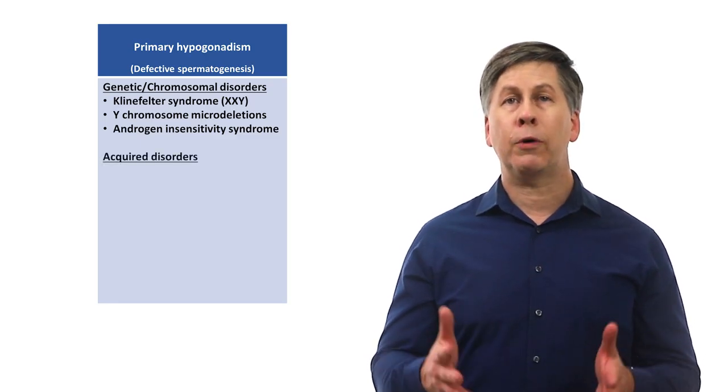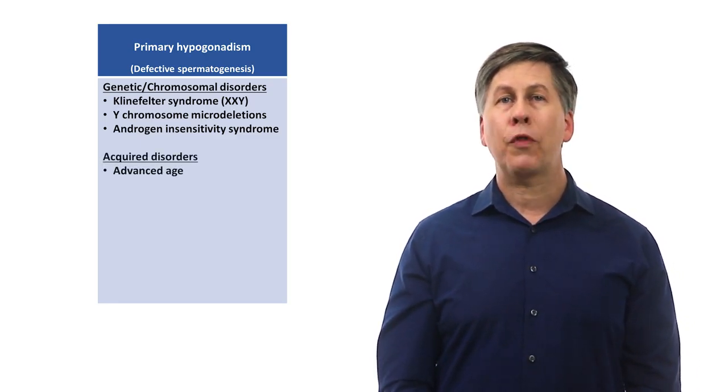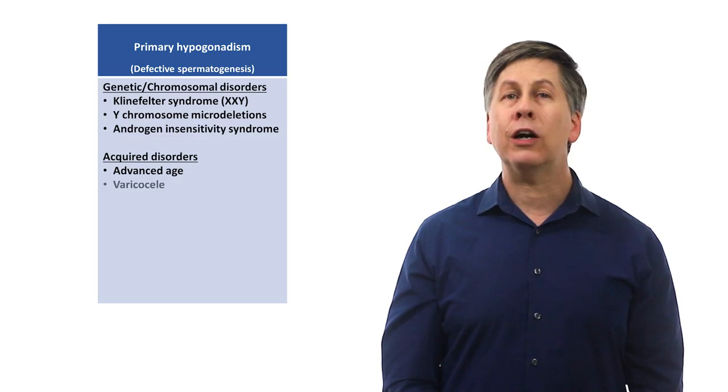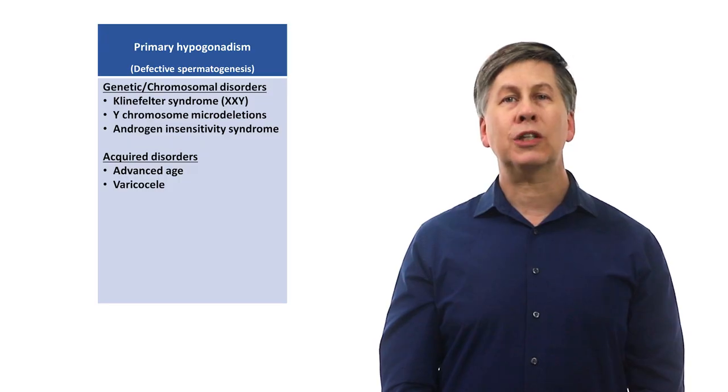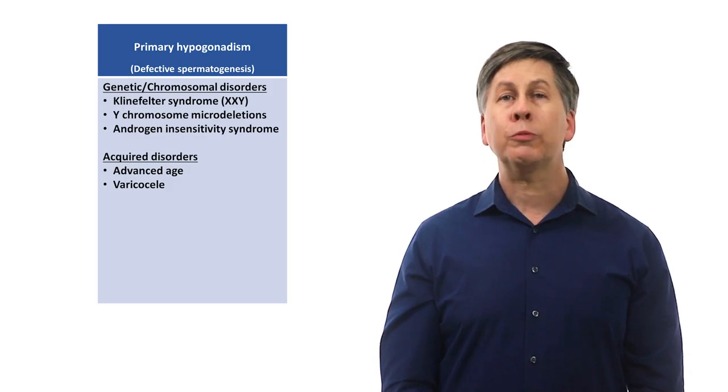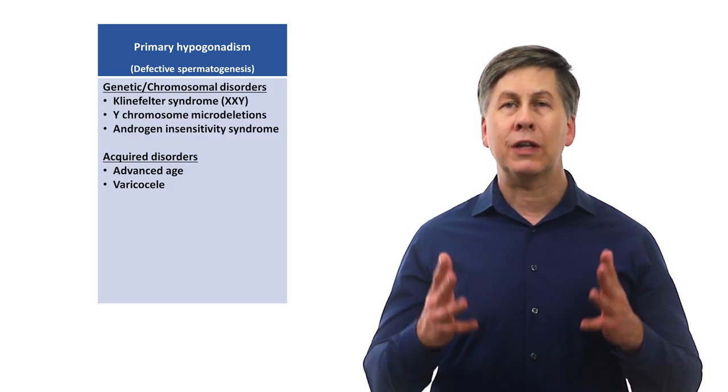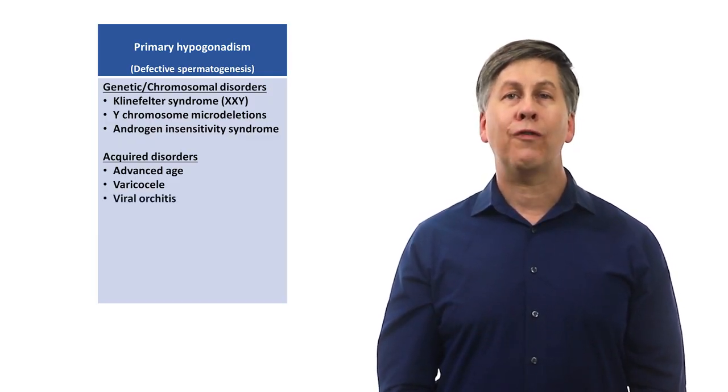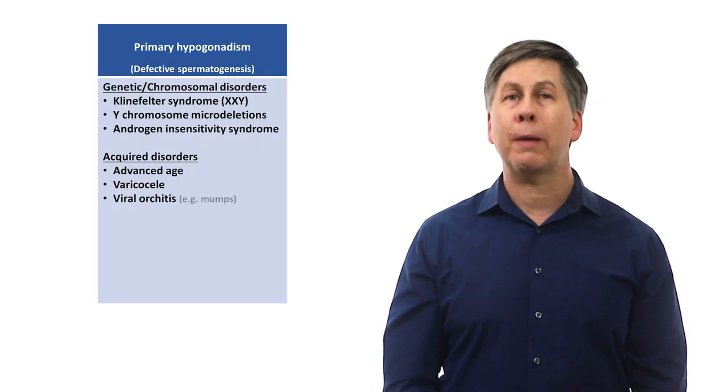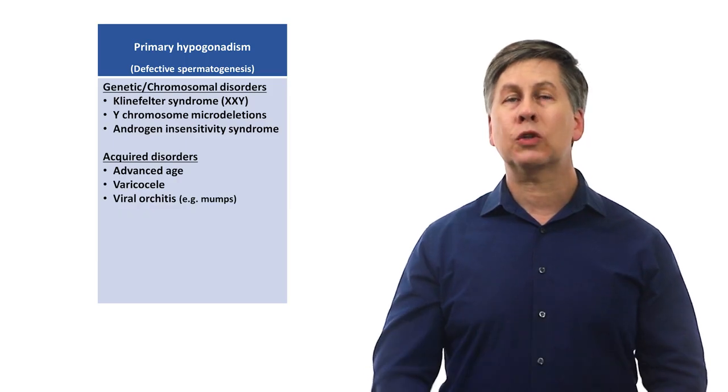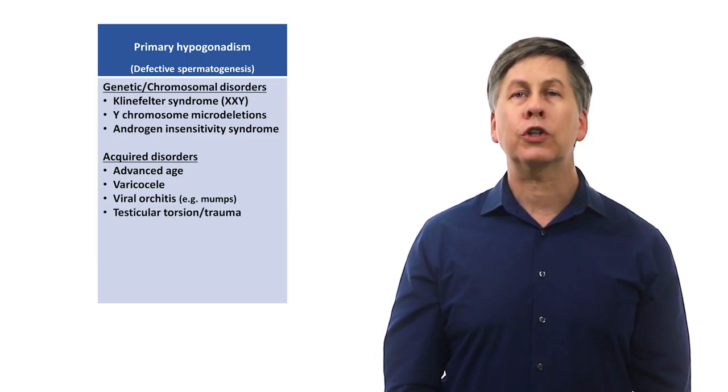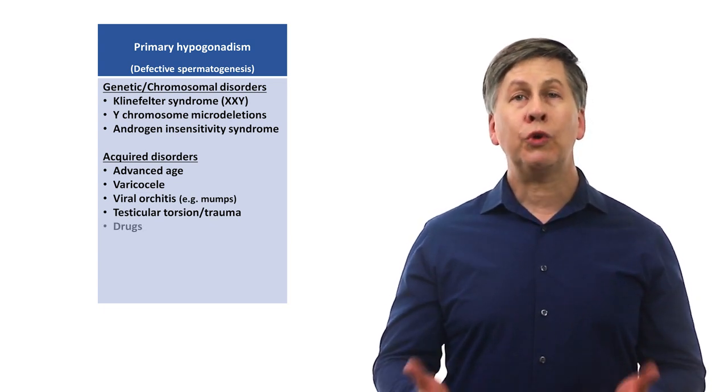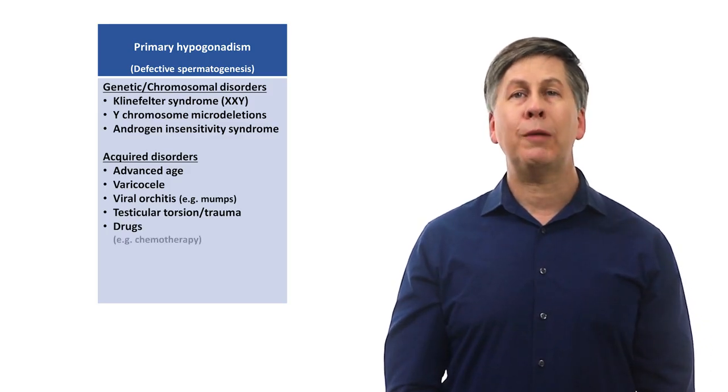The acquired disorders of primary hypogonadism include advanced age, although as previously mentioned, this is less of a factor for males as compared to females. A varicocele is a common problem in which veins within the scrotum are unusually dilated. There are multiple competing theories as to how precisely this leads to infertility. Infertility can also be the consequence of viral orchitis, or a viral infection of the testes, most classically caused by mumps. It can also be the delayed consequence of testicular trauma or torsion, the latter of which occurs when a testicle twists on its own blood supply, leading to ischemia.